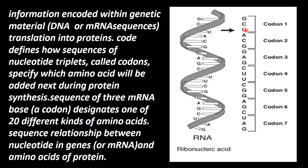Three nucleotides form a code — a codon. For example, G, C, U is a codon that specifies production of one amino acid. A, C, G specifies production of another amino acid. These codons specify which amino acid will be added next during protein synthesis.